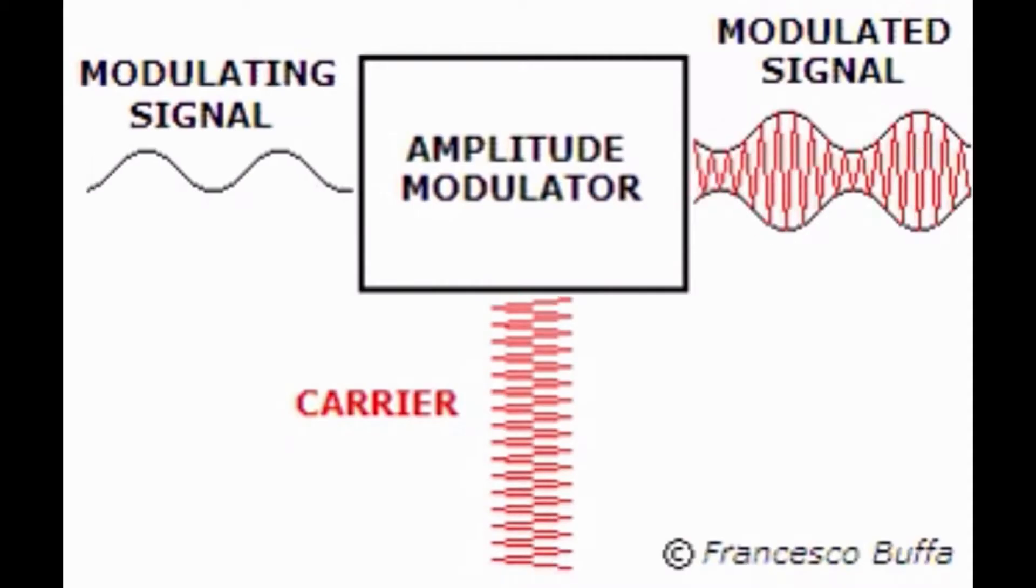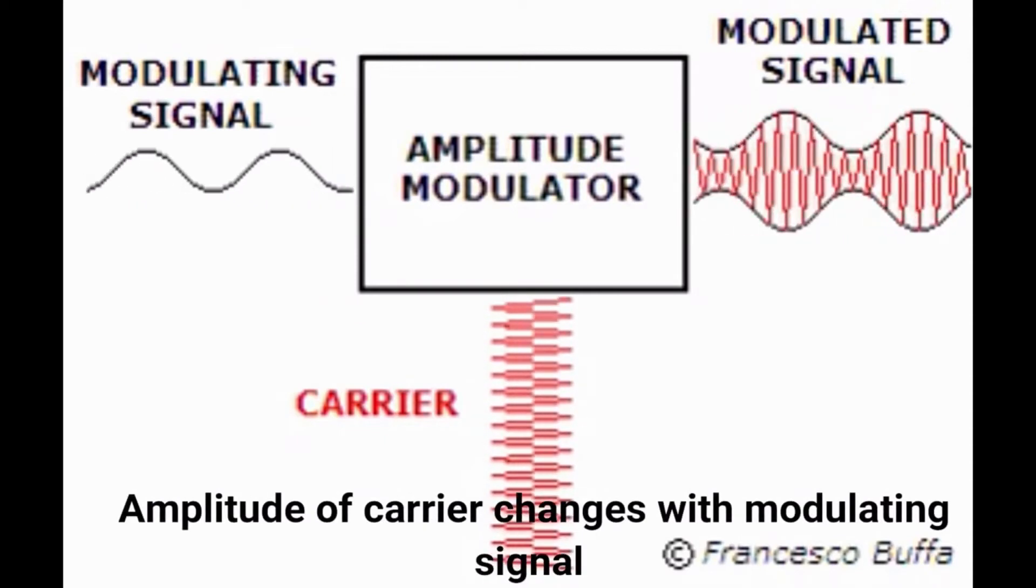Amplitude modulation. Here amplitude of carrier signal will be altered with respect to modulating signal and we will get amplitude modified signal as output.